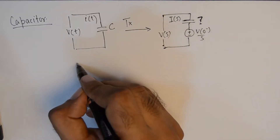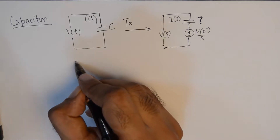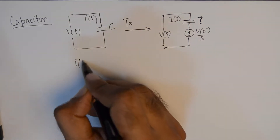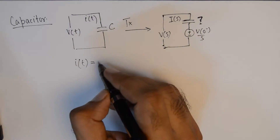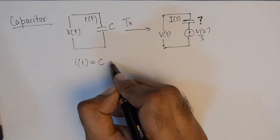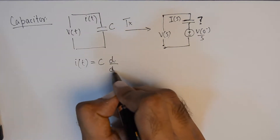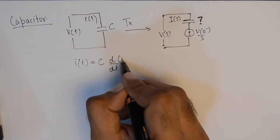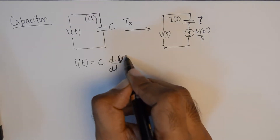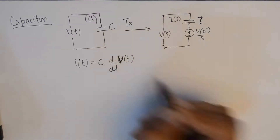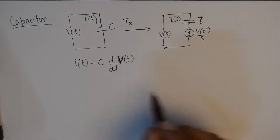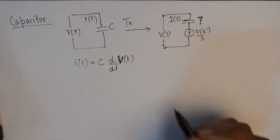Starting from the very basic formula for capacitance in time domain — the current through a capacitor is given by i(t) = C·dv/dt. This is the very basic formula for capacitor. Now taking the Laplace transform on both sides.